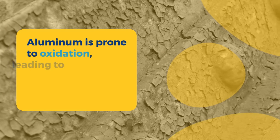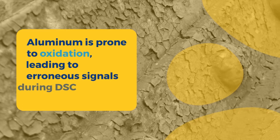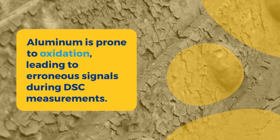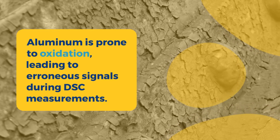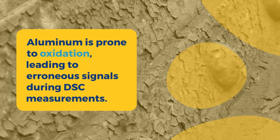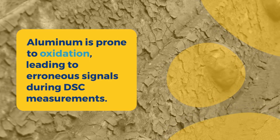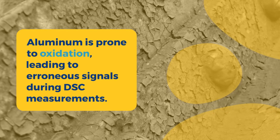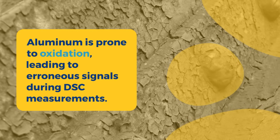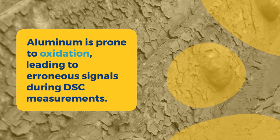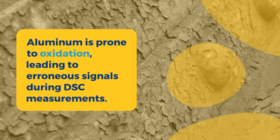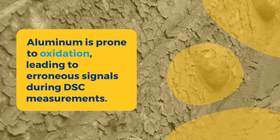Aluminum is prone to oxidation when exposed to air or certain environments. Oxidation can generate additional heat, leading to erroneous signals during DSC measurements. It is crucial to minimize the exposure of aluminum crucibles to oxygen and moisture.